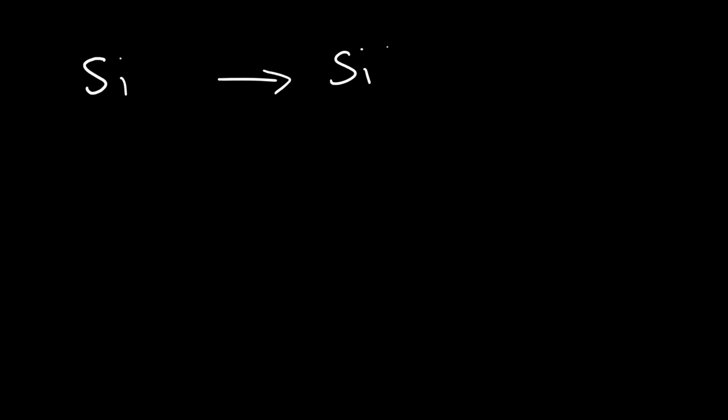In this video I want to give you a basic introduction into ionization energy. Ionization energy is the energy required to remove an electron from a gaseous atom. Using silicon as an example, when a valence electron in silicon is removed, it becomes ionized and turns into an ion — thus the term ionization energy. You can also remove an electron from an ion, so it doesn't have to be a gaseous atom; it could be a gaseous ion.